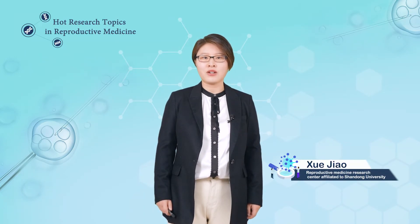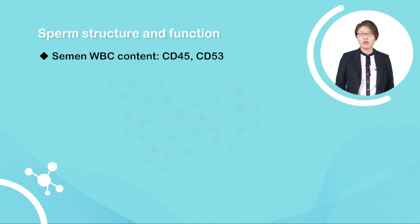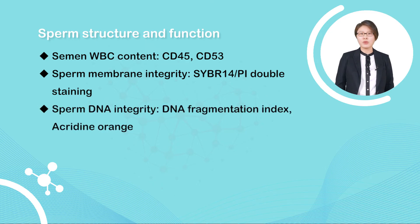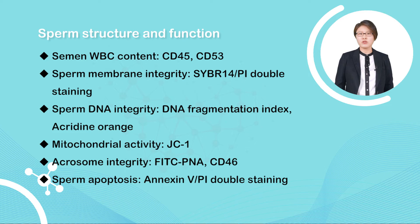Currently, flow cytometry has been successfully applied to the analysis and isolation of male germ cells in mouse models, providing effective technical support to explore the mechanism of spermatogenesis. The sperm functional analysis mainly includes CD45 and CD53 staining to analyze semen leukocyte content, SYBR14/PI double staining to detect sperm plasma membrane integrity, Acridine orange staining to detect sperm DNA integrity — that is the sperm DNA fragmentation index — as well as mitochondrial membrane potential and acrosome integrity. This functional assay on sperm enables routine semen analysis at the cellular and molecular level.